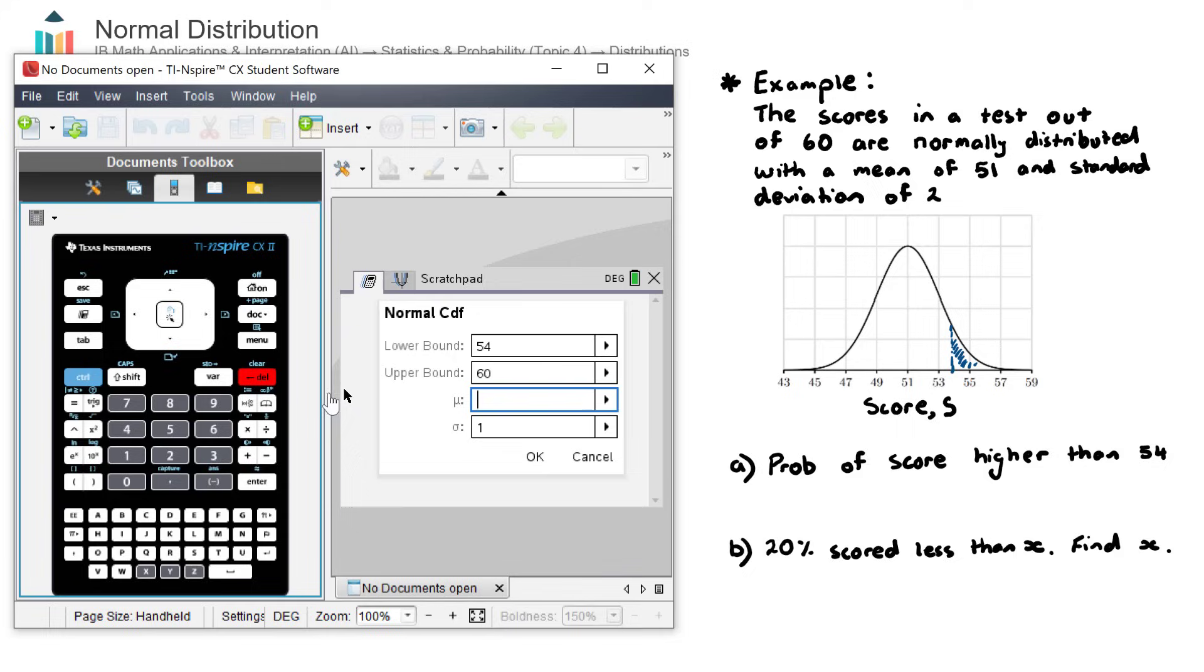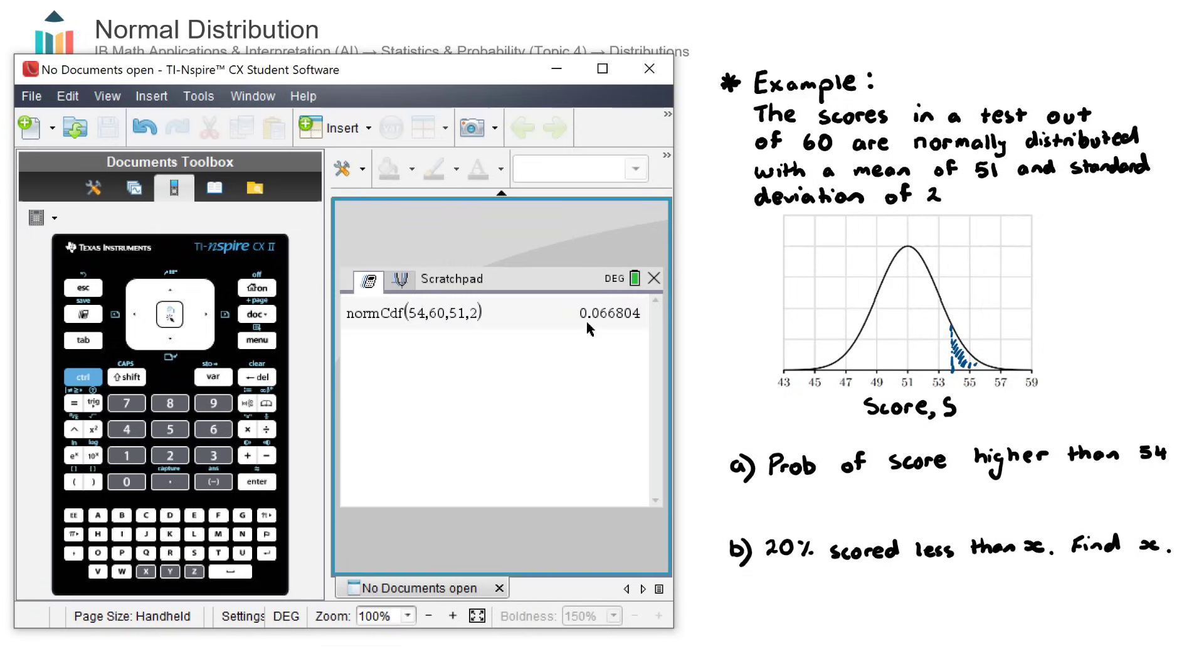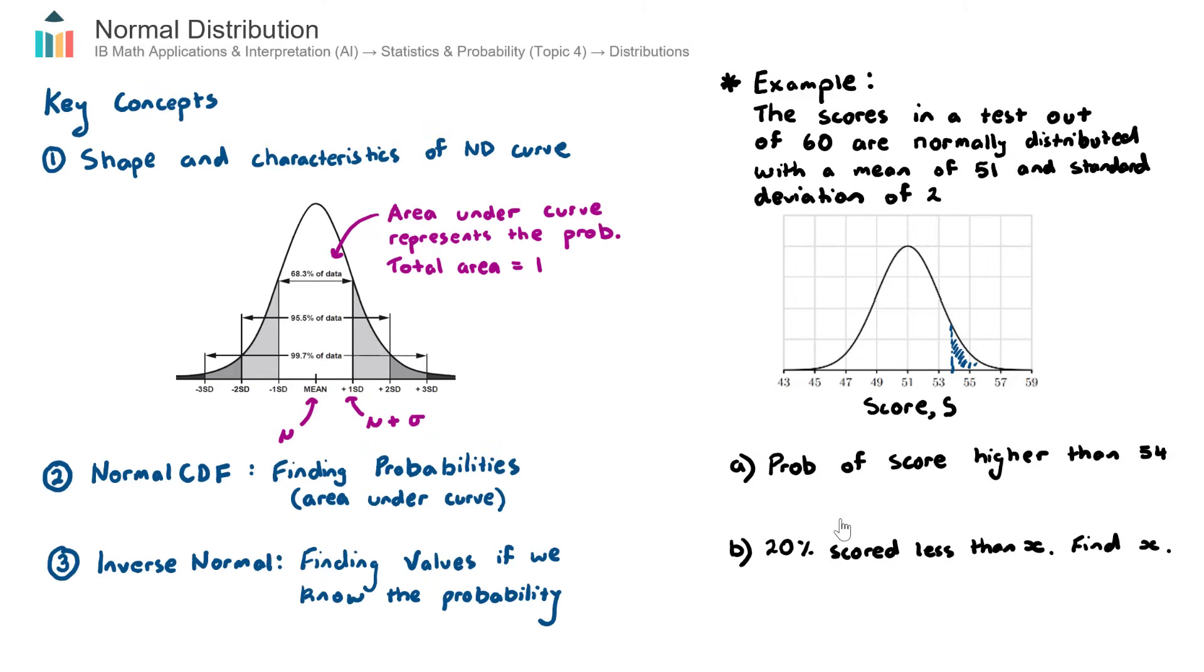Now this here is the mean, this mu here. So we're now telling the calculator that my normal distribution curve has a mean of 51 and a standard deviation of two. I hit okay. And that is my answer there. So 0.0668. So writing this, the probability of a score being greater than 54 is equal to 0.0668. So that is the area of the shaded region, which also represents the probability of this occurring.